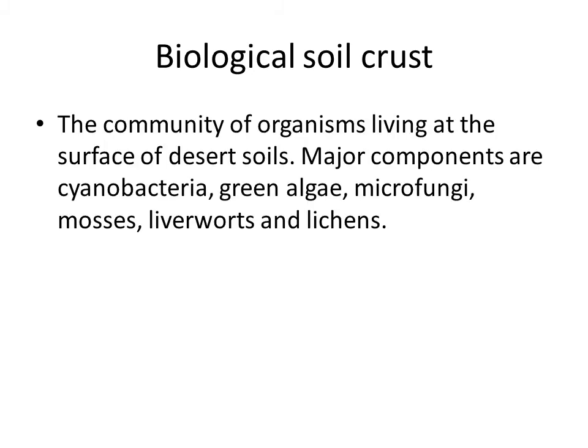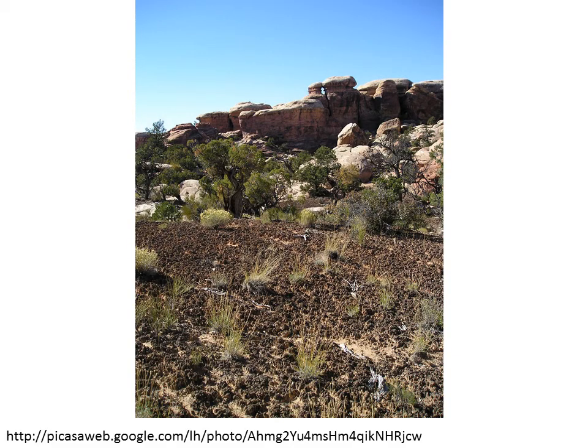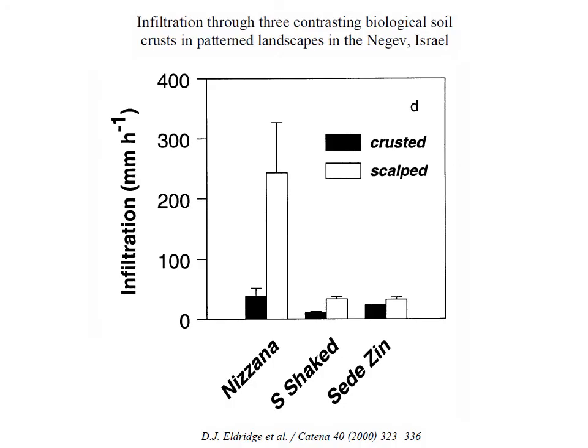A biological crust is a community of organisms living at the surface of desert soils. It includes cyanobacteria, green algae, micro fungi, mosses, liverworts, and lichens — all kinds of creatures that can be found making this crust on desert soils. There's actually an organization, soilcrust.org, dedicated to biological soil crusts, which are typically found in the desert. This photo shows the community of organisms that makes up the biological soil crust — a very interesting ecosystem.